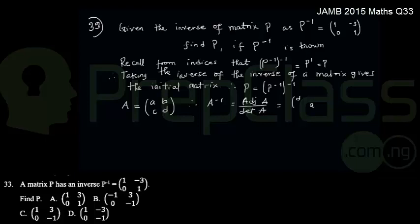Now the elements on the other diagonal, which are C and B, will be negated. Their sign will be negated. So this will become minus B and this will become minus C.